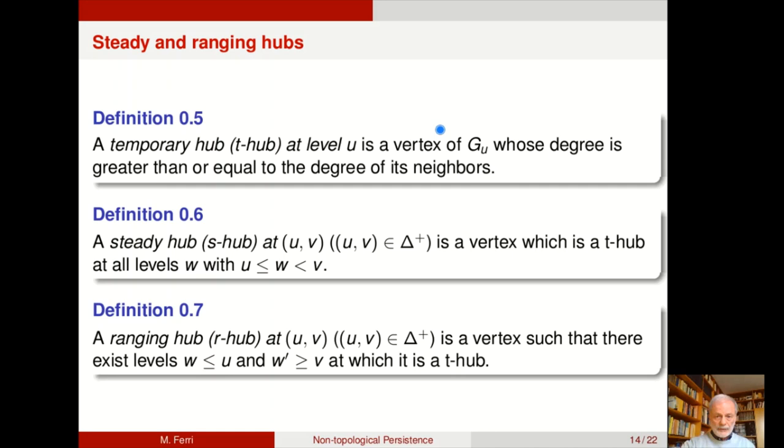If it is a vertex of G sub u, the subgraph under u, whose degree is greater than or equal to the degree of its neighbors in that particular subgraph. A steady hub or S-hub at uv is a vertex which is a T-hub at all levels w with u less than or equal to w less than v. A ranging hub or R-hub at uv is a vertex such that there exist levels in the sense w under u and w prime above v at which it is a T-hub.